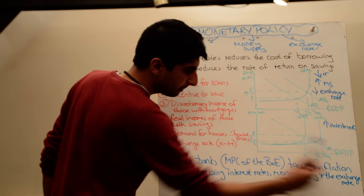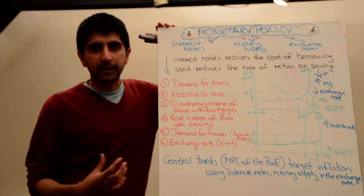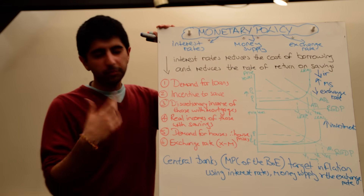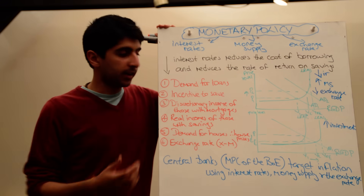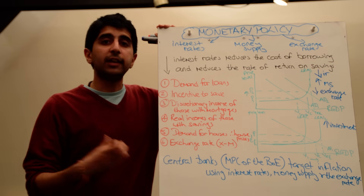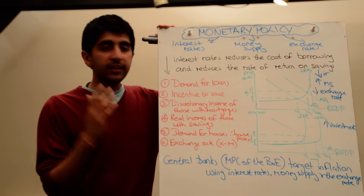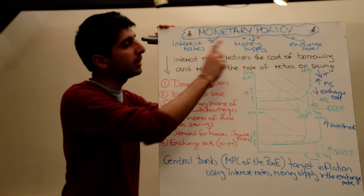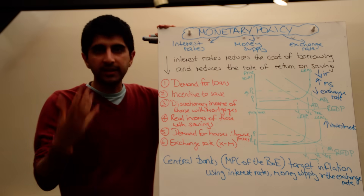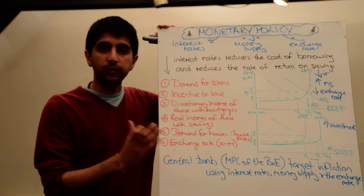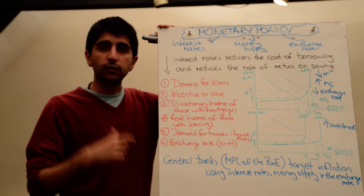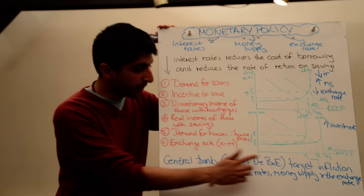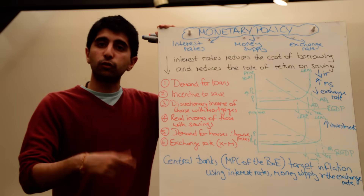Central banks tend to be in charge of monetary policy around the world — the Bank of Japan, the Federal Reserve in America, the European Central Bank in the Eurozone, and the Bank of England in the UK. These central banks control what happens to monetary policy; this tends not to be in government control. Fiscal policy is, but monetary policy is in the hands of central banks. Within central banks, committees decide what happens to interest rates — such as the Monetary Policy Committee of the Bank of England, which decides what happens to interest rates each month.